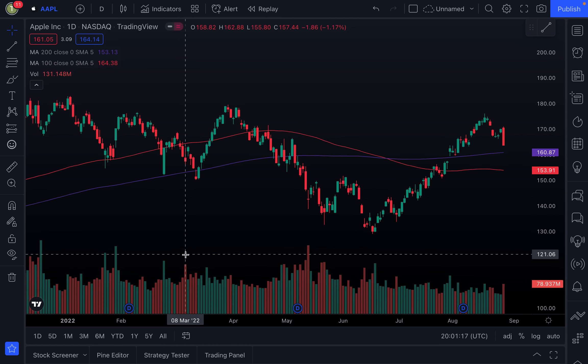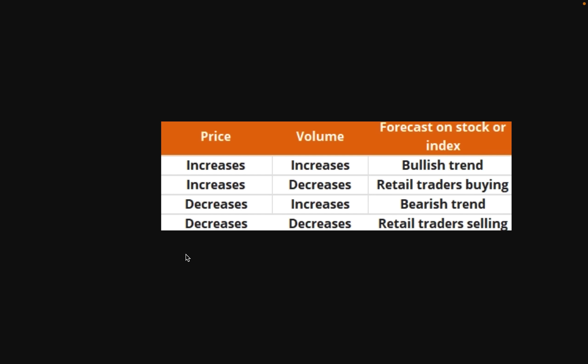Here's the general consensus on the price and volume relationship, which you should understand and be able to spot. So here we have the price column, the volume column, and the forecast for the stock, index, or whatever asset it might be. If you see the price increasing and you see the volume also increasing, this tells us we're in a very strong bullish trend.